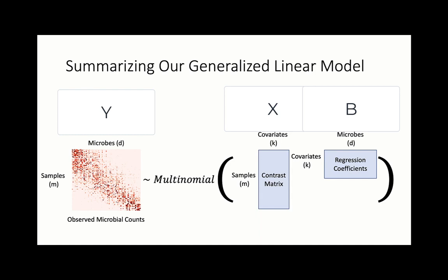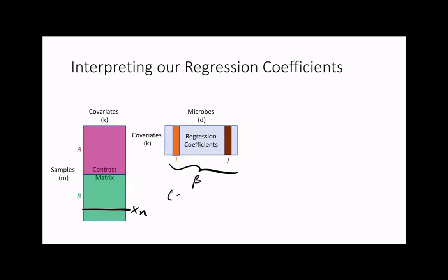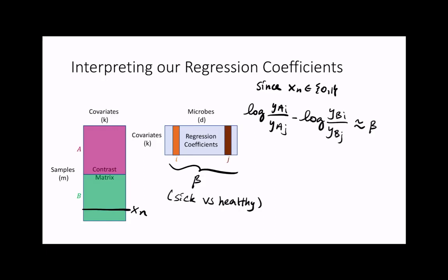The question is how we can interpret these regression coefficients. If we focus on the regression coefficients for species i and j, it turns out that the difference between these two coefficients gives us the average difference of the log ratio i and j between the sick and healthy patients. In addition, these regression coefficients are proportional to the log fold change. This means we can rank the regression coefficients from largest to smallest: the microbe with the largest coefficient will have the largest log fold change and will be observed to be increasing the most relative to all other microbes.